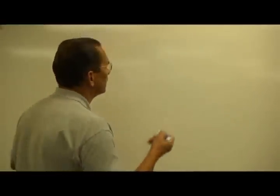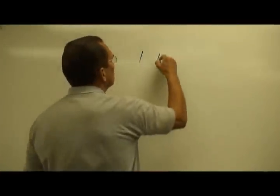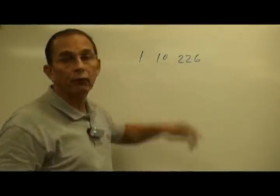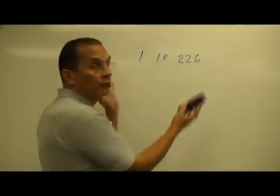First we need to define terms. What's a whole number? A whole number is anything like 1 is a whole number, 10 is a whole number, 226 is a whole number. Any numbers without fractions or decimals, those are whole numbers.